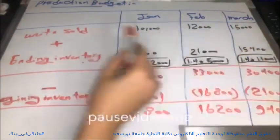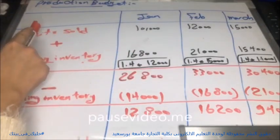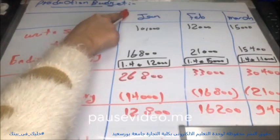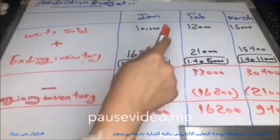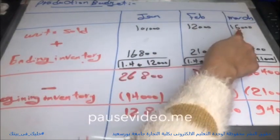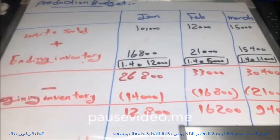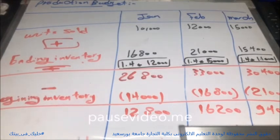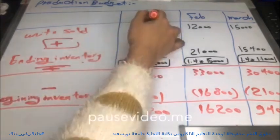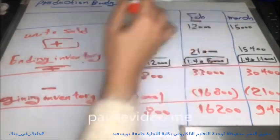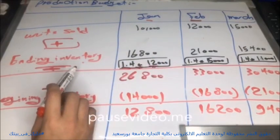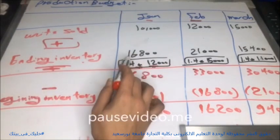First, we get units sold from the given exercise: January 10,000 units, February 12,000 units, March 15,000 units. Then we add ending inventory. From the exercise, the company policy is to keep 1.4 times next month's sales as ending inventory. For January, ending inventory = 1.4 × 12,000 (next month's sales) = 16,800 units. For February, ending inventory = 1.4 × 15,000 = 21,000 units.